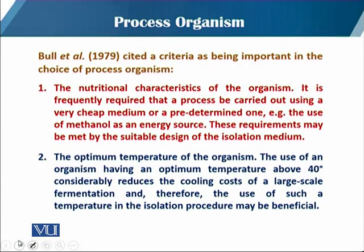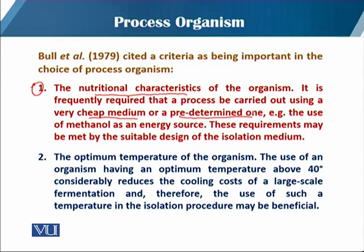Bull et al. in 1979 cited criteria as being important in the choice of any process organism. The first criteria on which the process organism has to be selected is the nutritional requirement or nutritional material characteristics of that organism. It is frequently required that a process be carried out using a very cheap medium or a predetermined one — for example, the use of methanol as an energy source. These requirements may be met by suitable design of the isolation medium.